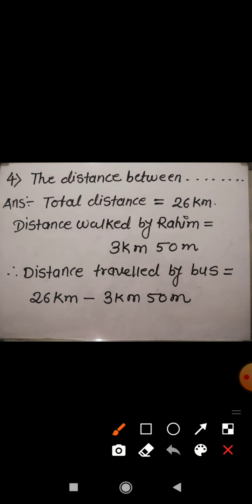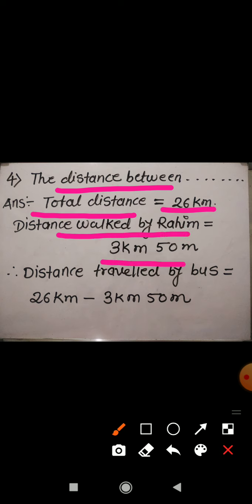Now come to question number 4. The distance between two villages is 26 km — this is the total distance given to us. Rahim walks 3 km 50 meter and then takes a bus to travel from one village to another. Find the distance he travelled by the bus. Out of the 26 km total distance, the distance walked by Rahim is 3 km 50 meter, and the remaining distance he covered by bus.